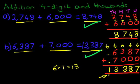So that is how we do addition of four-digit numbers and thousands using the vertical format.